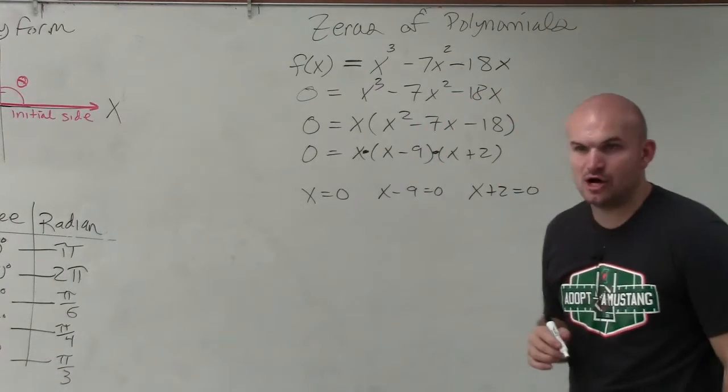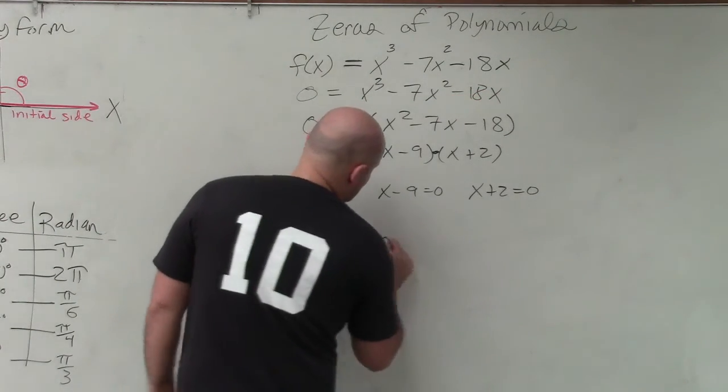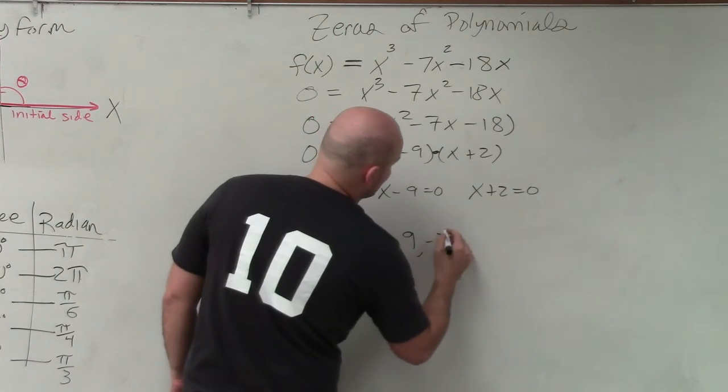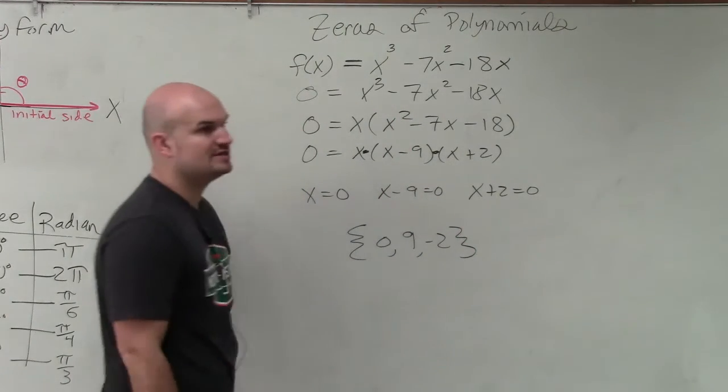And then go ahead and solve. So my solution set is going to be 0, 9, and negative 2 when I solve for 0.